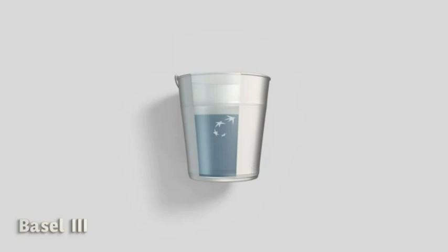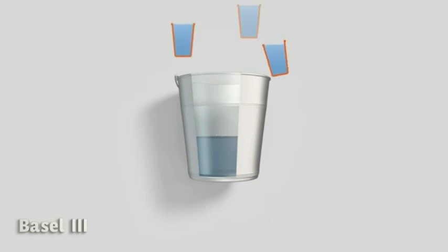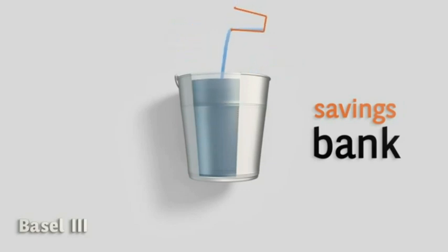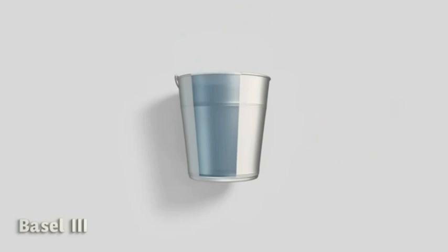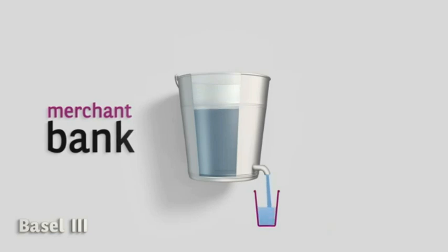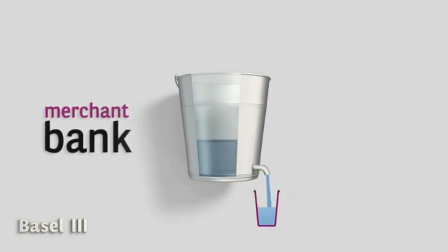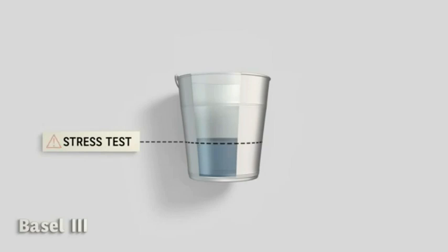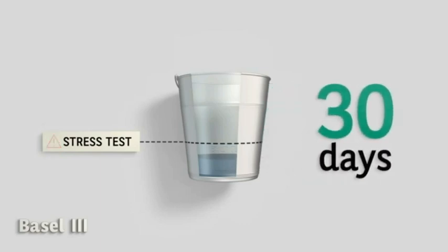The in- and outgoing cash flows are very typical to each bank. A savings bank specialised in the collection of deposits will see its bucket fill up at high speed and can even have an overflow. At the other end of the spectrum, a merchant bank specialised in lending activities to large corporates will see its bucket emptied at high speed. It's mainly the speed of the bucket filling up and emptying that is typical for each bank. For this, Basel III imposes standardised stress tests on all banks.